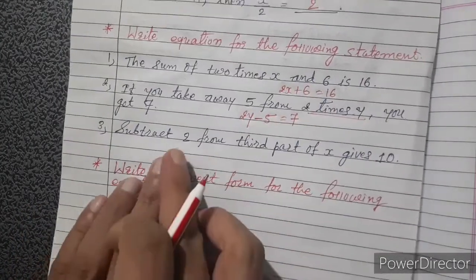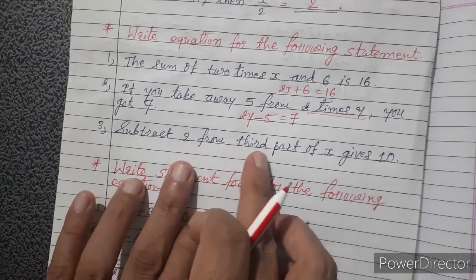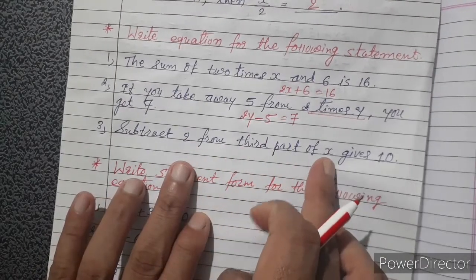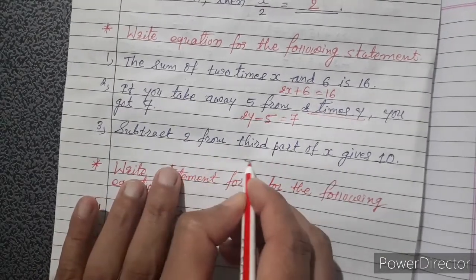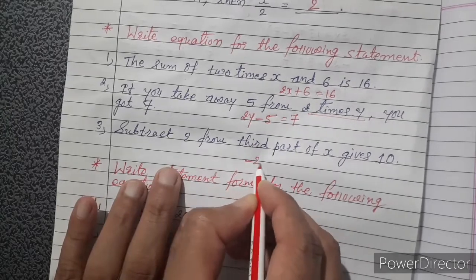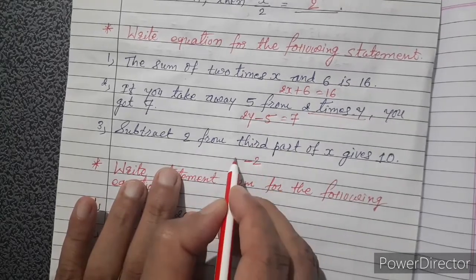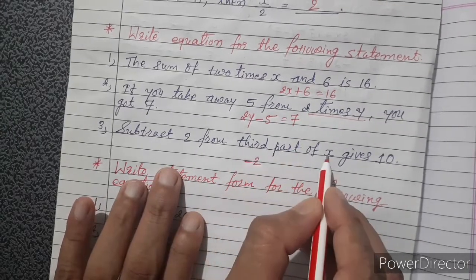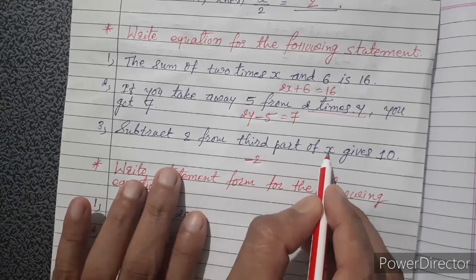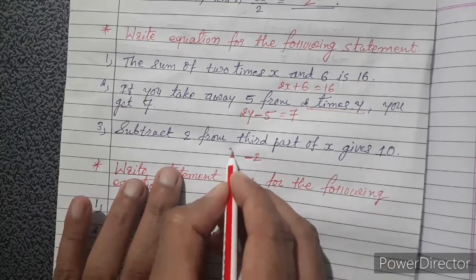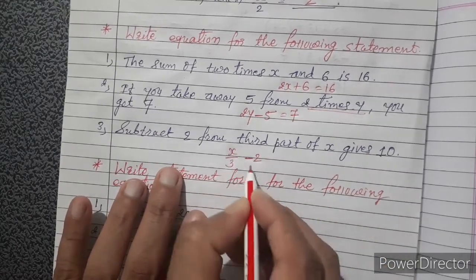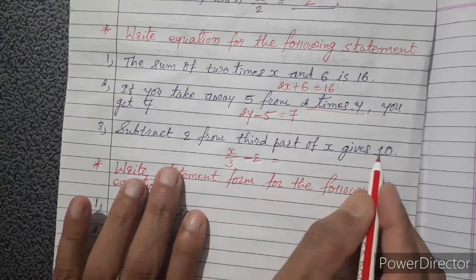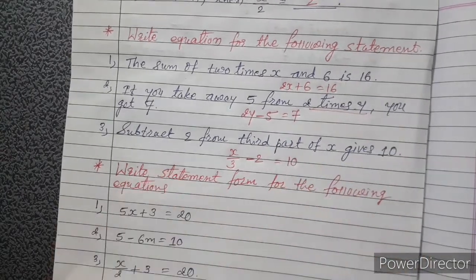Third statement: subtract 2 from the third part of x gives 10. Third part means x divided by 3, so the equation is x divided by 3 minus 2 equals 10.